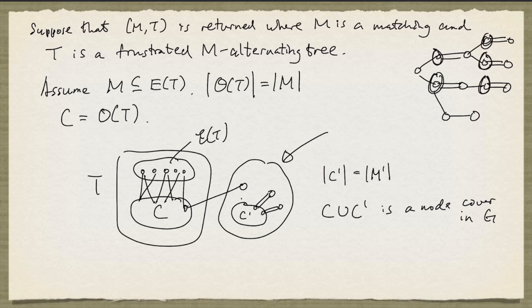That's not difficult to see because first of all, C is definitely a node cover in the tree. C' is a node cover in the graph apart from the tree. And any edge that goes between the tree and this part here is already incident to a node in C. So every edge must have an end in either C or C'.